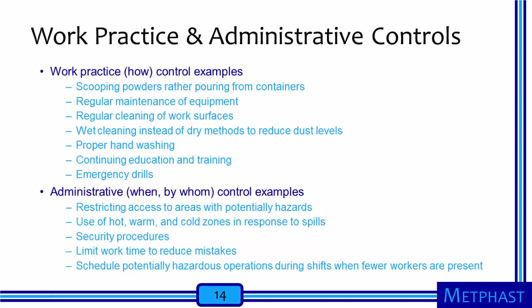Let's consider work practice and administrative controls next. Work practice controls alter how workers perform a task. Ways in which someone can do work differently might include scooping powders rather than pouring them from containers in order to reduce airborne dust exposures, regular maintenance of equipment, regular cleaning of work surfaces, using wet cleaning instead of dry methods so that not as much dust is produced, washing hands properly to prevent exposures when workers eat or go home, continuing education and training on how to work safely, and emergency drills so that workers know how to exit their workplace while shutting down critical processes on the way out.